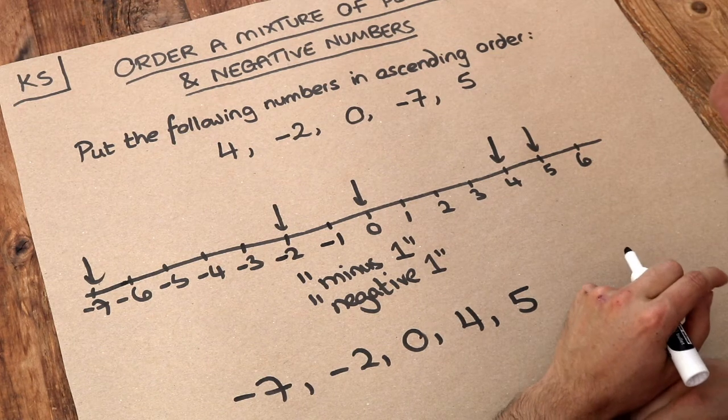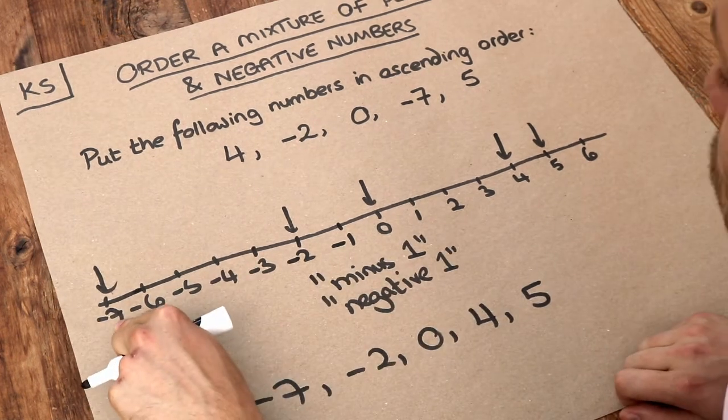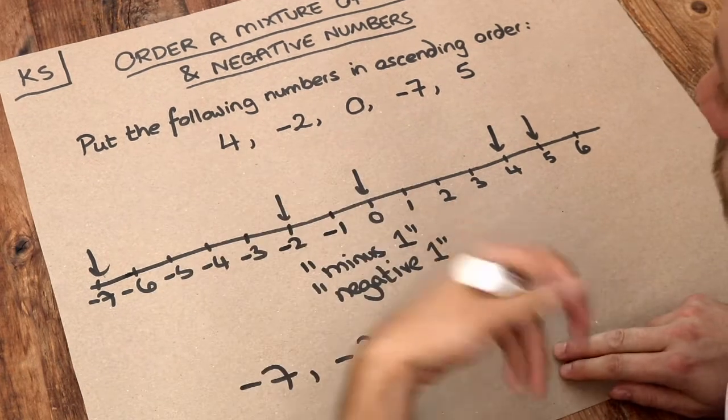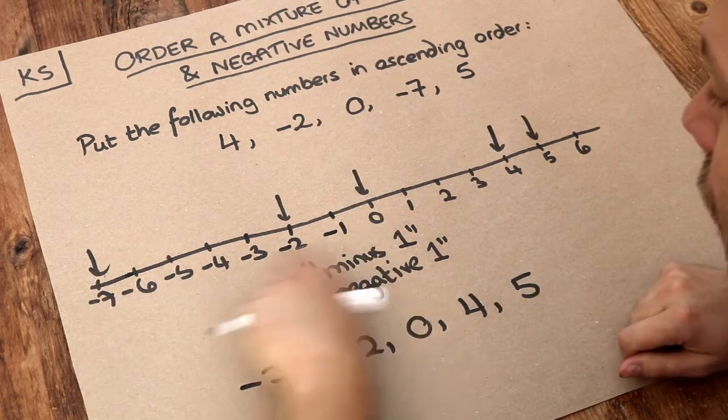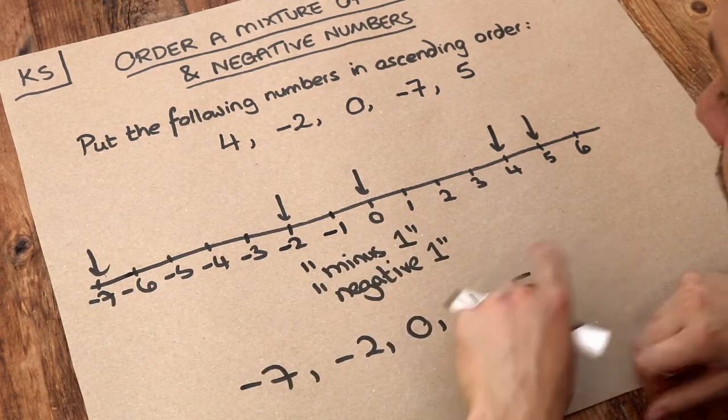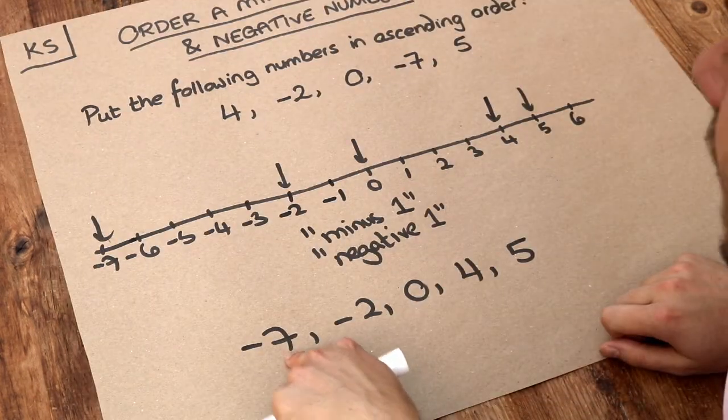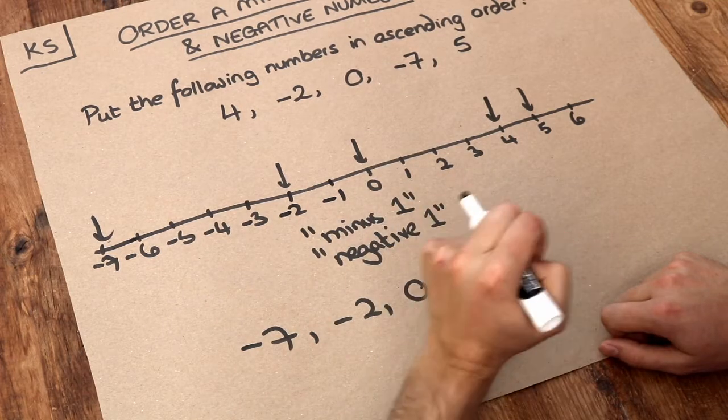And I should be careful about describing minus seven as a small negative number. Because actually, you could describe, say, minus 100 as a large negative number, because it's a number that's far away from zero. So really, I should say that minus seven is the least of these numbers, rather than the smallest of them. That would be slightly more mathematically correct.